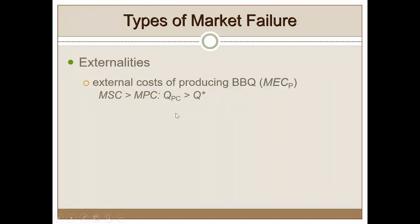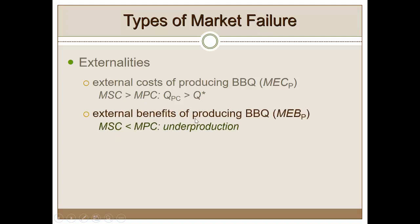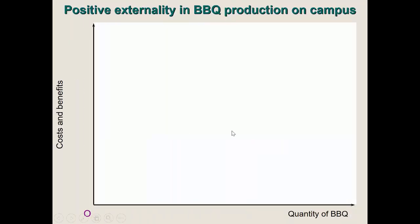We just covered the case where there is overproduction — Qpc is greater than Q*, the optimal point when the marginal social cost is greater than marginal private cost. Remember, the idea is to equalize MPC and MSC for an optimal point, but at the moment they are not equal. Now, external benefits of producing barbecue — there is a positive externality here, a marginal external benefit, and in this case the barbecue man would be under-producing. We want more barbecue, but it turns out he may not produce it because he's not internalizing the benefits.